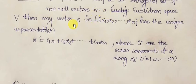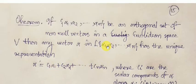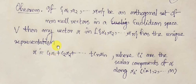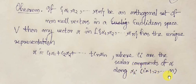The theorem states that alpha must have a unique representation: alpha = c_1*alpha_1 + c_2*alpha_2 + ... + c_n*alpha_n, where each c_i is the scalar component of alpha along the corresponding vector alpha_i, for i = 1 to n.